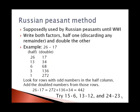The Russian peasant method is similar. It was named because it was supposedly used by Russian peasants until World War I. The idea is to write both of the factors: in one column we're taking half and ignoring any remainders, and in the other column we're doubling.